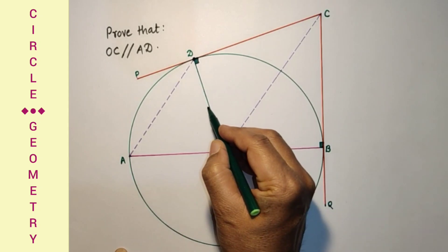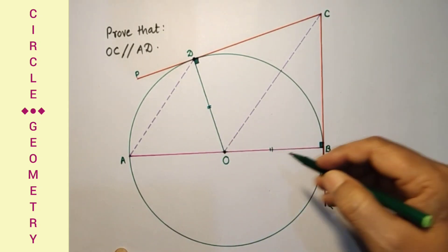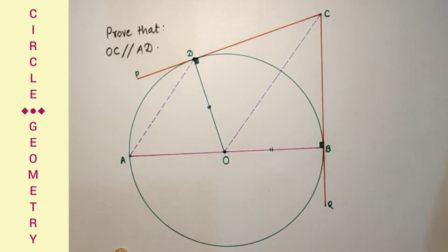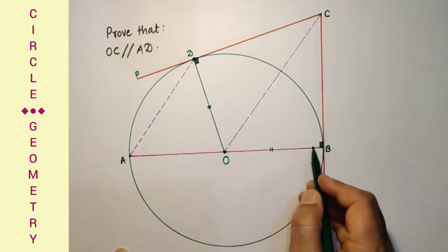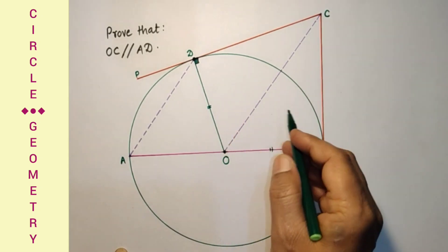OD is equal to OB radii. This OC is common. This has 90 degrees, this has 90 degrees. By right angle hypotenuse and side test, these two triangles are congruent.